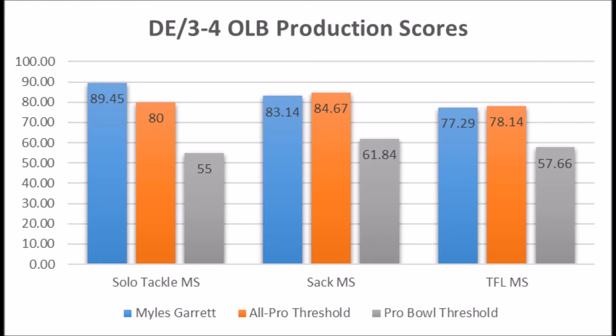The bottom line is there was nothing wrong with Myles Garrett's production despite having a down year — just like Joey Bosa had a down year, just like Jadeveon Clowney had a down year. We need to get over the fact that some defensive ends entering the draft have a down year. It's a narrative that keeps popping up — it said Clowney was going to be a bust, it said the same about Bosa, and then the same thing with Myles Garrett. This narrative needs to die.